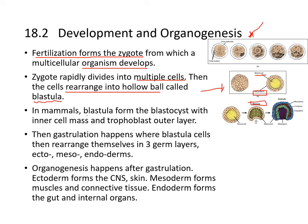In mammals, the blastula forms from the blastocyst, which contains an inner cell mass and an outer layer called the trophoblast. The blastocoel is inside, the inner cell mass is within that, and the outer layer is the trophoblast.